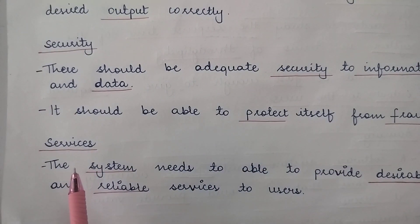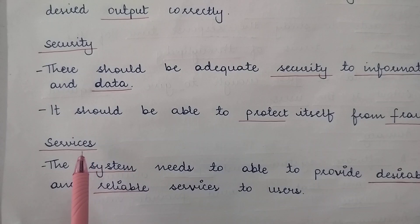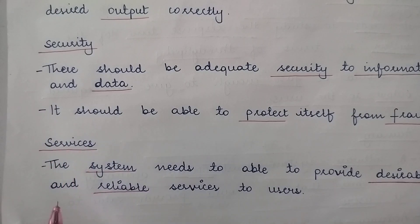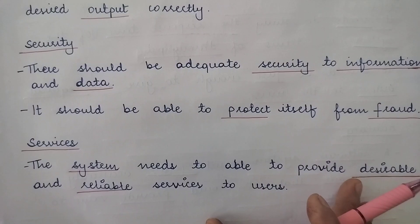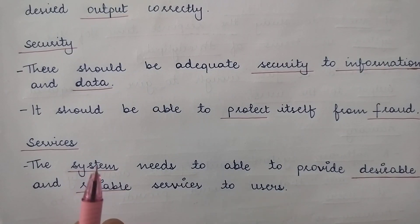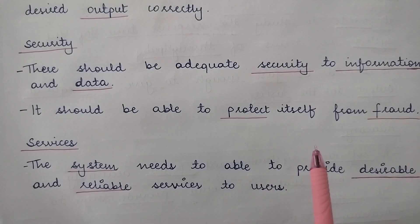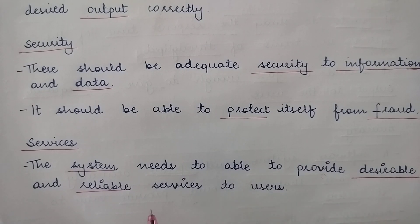The next factor considered is services. When we study operational feasibility, we also study the services being provided. The system needs to be able to provide desirable and reliable services to the users. Whatever services the information system is providing should be desirable — whatever is required should be provided, as unrequired services are of no use. For example, if you want to study system analysis and design and I teach you IoT, that service serves no purpose. So services must first be desirable, and of course they should be reliable — trustworthy — to the users.